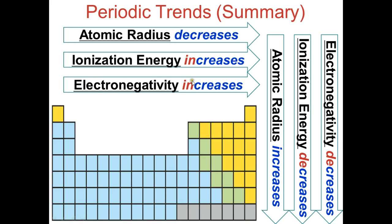With more protons, it's harder to steal an electron because there's more force pulling them in. Going down, atomic radius increases because more shields make the atom wider. Ionization energy decreases because the shields prevent nuclear force from affecting outer electrons, making it easy to remove an electron. Electronegativity also decreases because with many rings, the nucleus does a poor job keeping its own valence electrons, let alone attracting new ones.